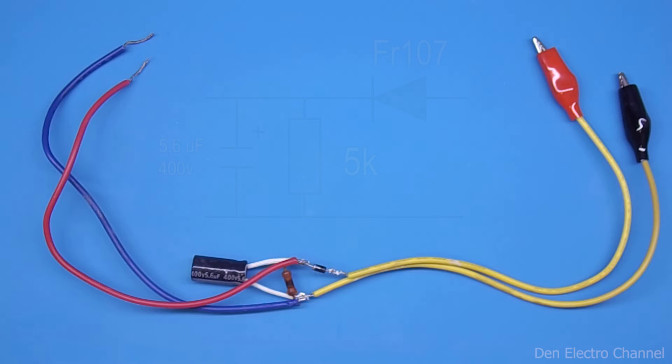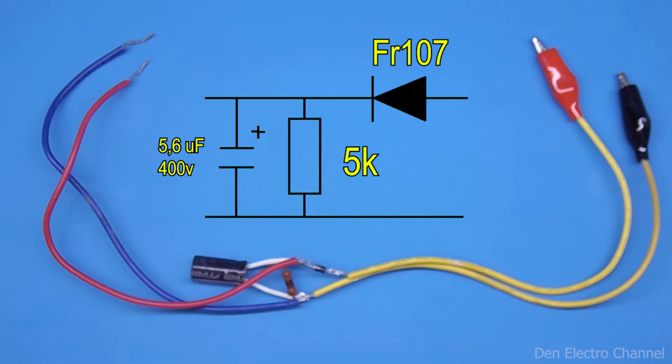If you wish, you can assemble a small circuit like this to check the voltage. Instead of these parts, you can put any others, the main thing is that the diode is high frequency. The circuit is a conventional half-wave rectifier.